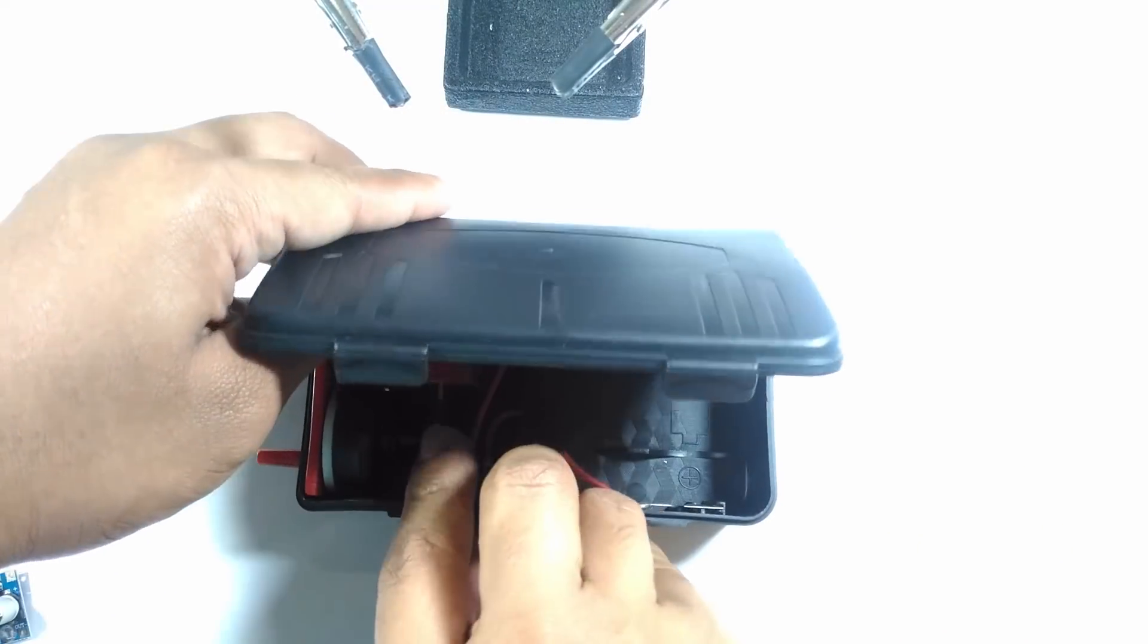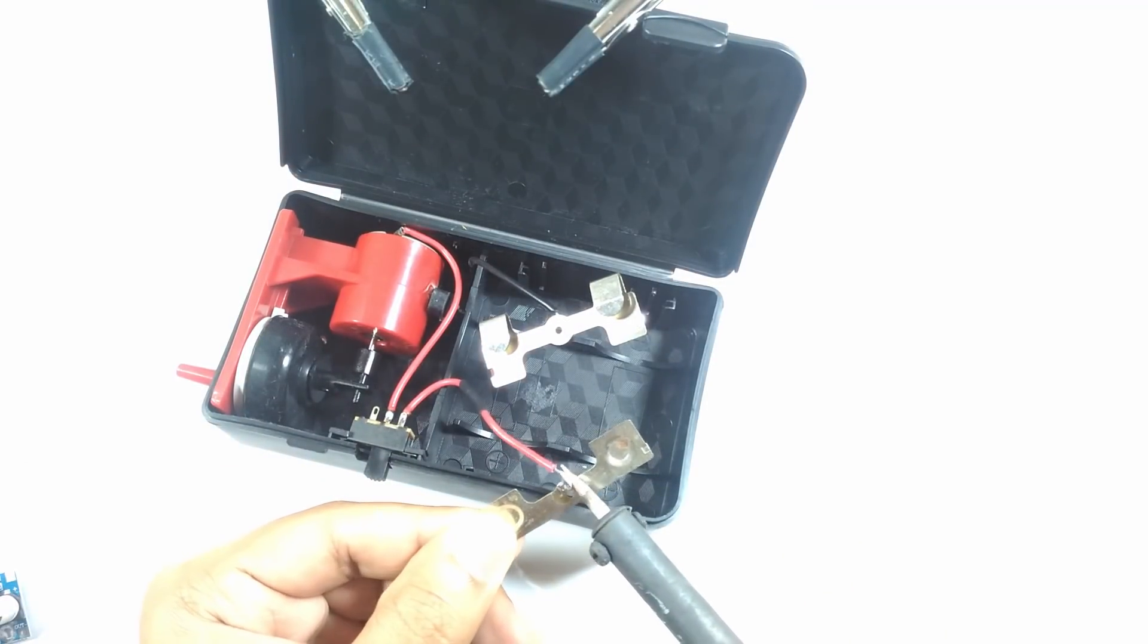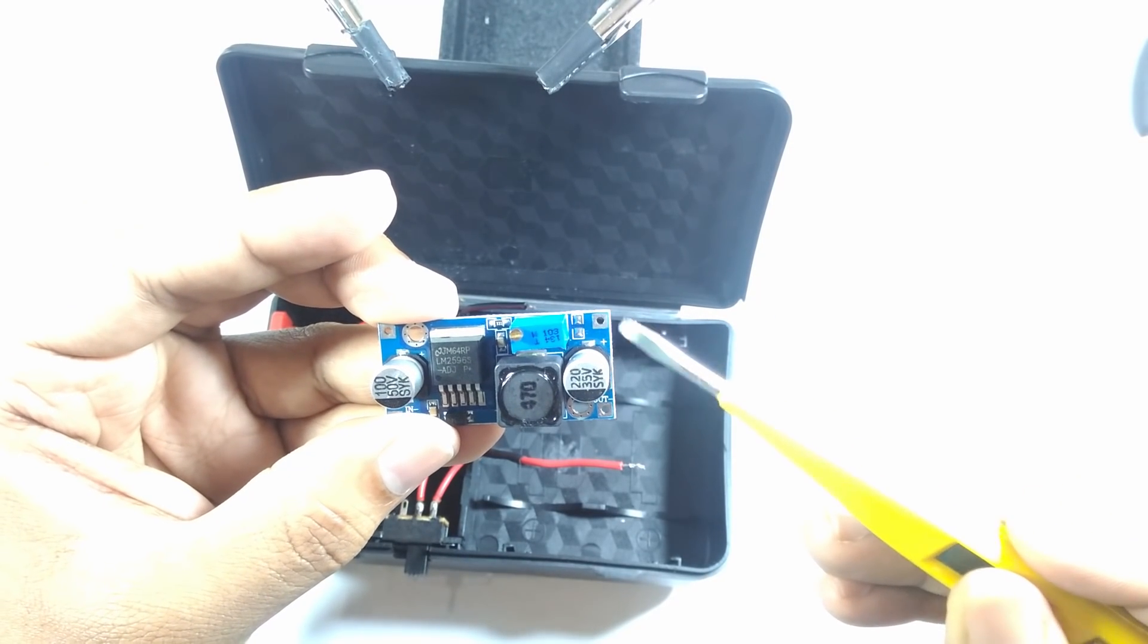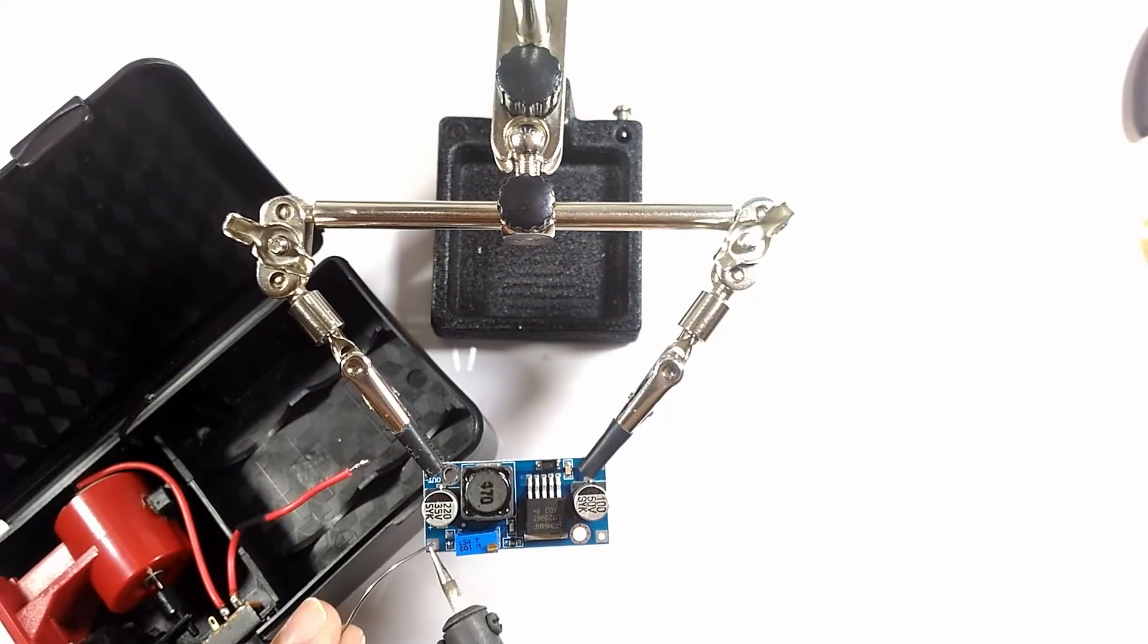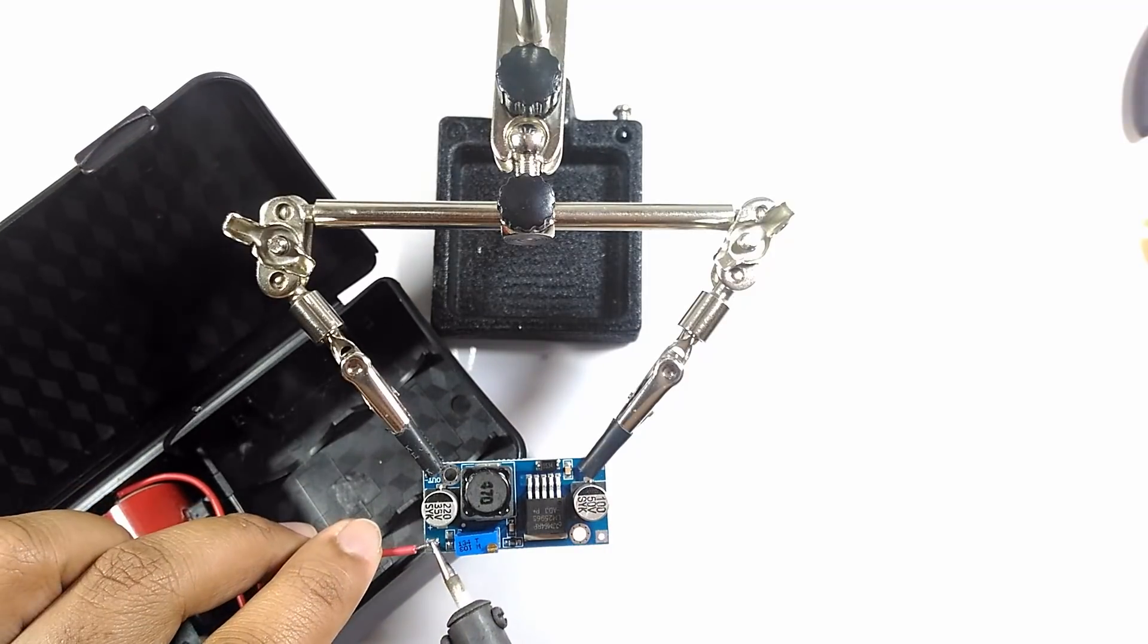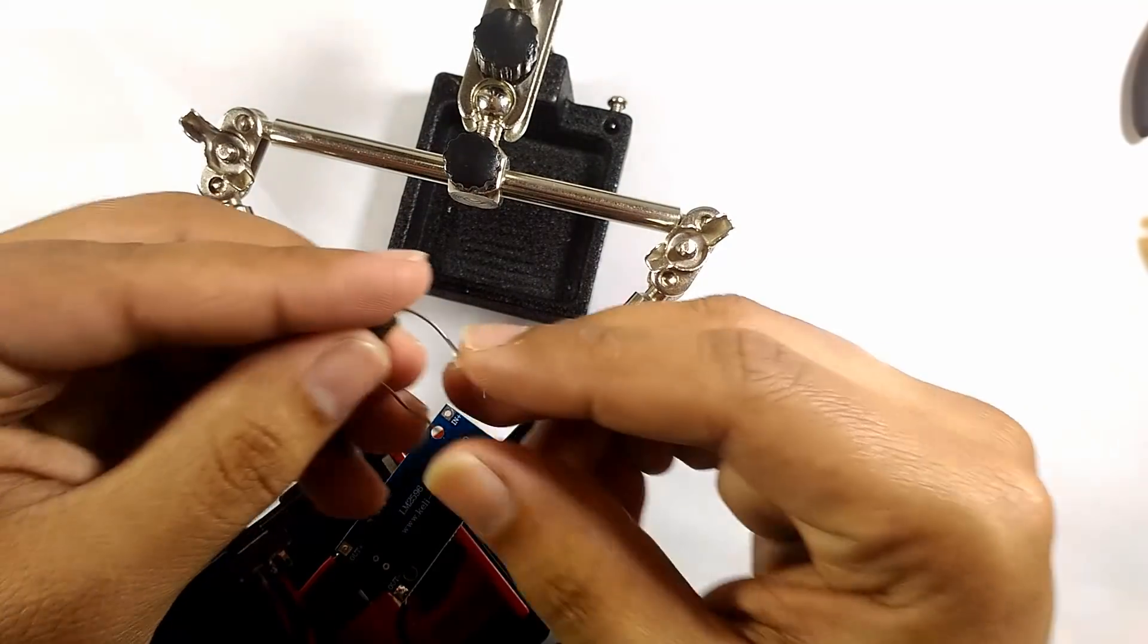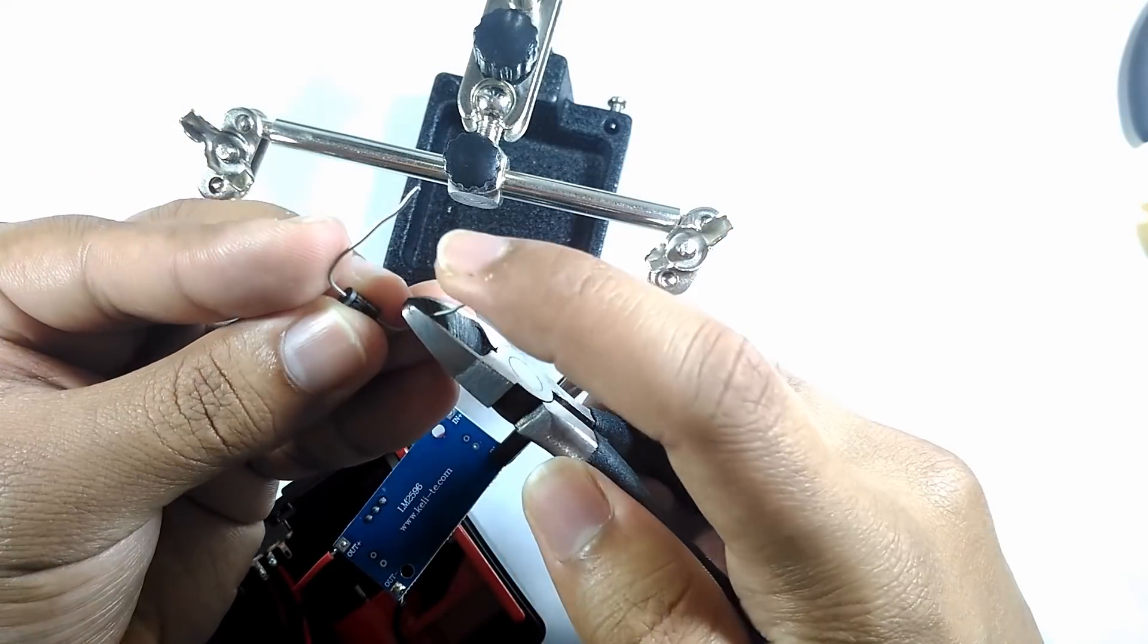Now it's time to fix all these components into the air pump. I desoldered the battery connectors which were meant for the D size battery so that I can solder the wires from the motor to the buck converter. I also added another diode as a flyback diode for the motor since motors are comprised of coils as well.